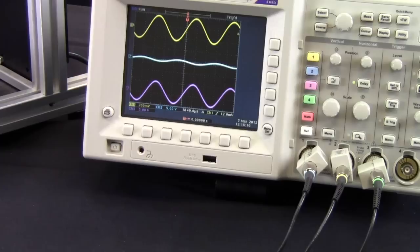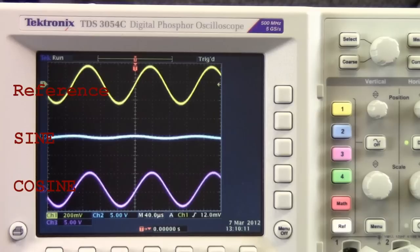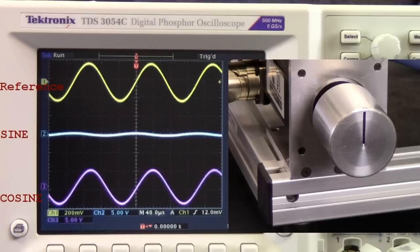We will use an oscilloscope to view what goes on inside a resolver. Channel A is connected to our reference signal, channel B is connected to our sine output, and channel C is connected to our cosine output. Start with the motor at zero position, or what is called the zero crossover point. Sine is at zero amplitude, and cosine is at peak amplitude and in phase.